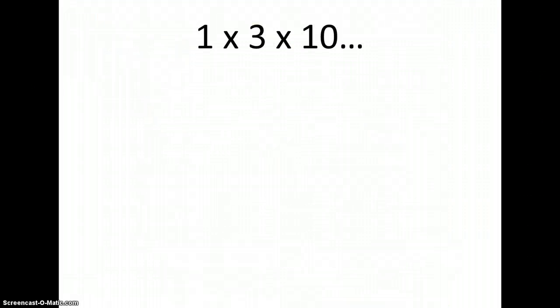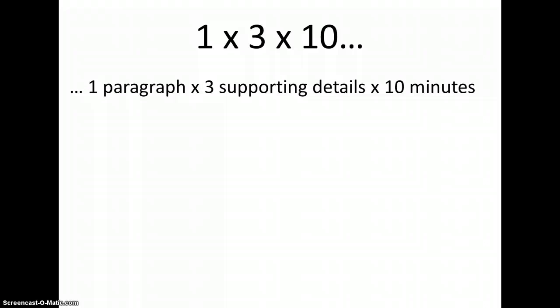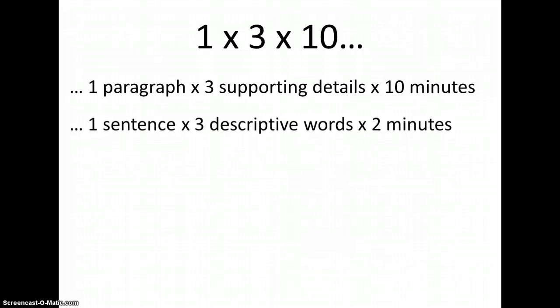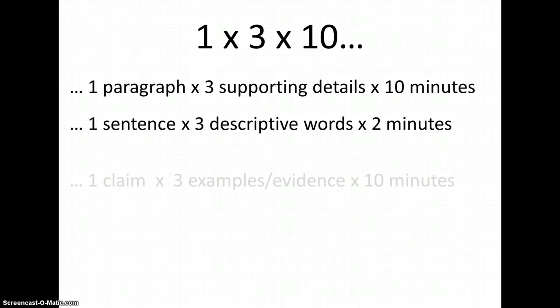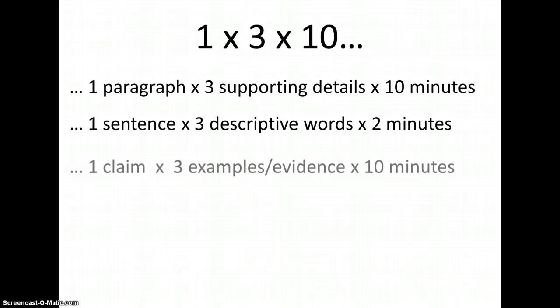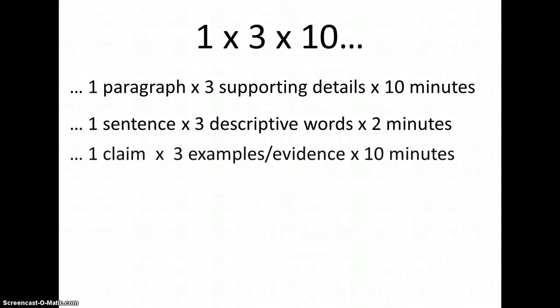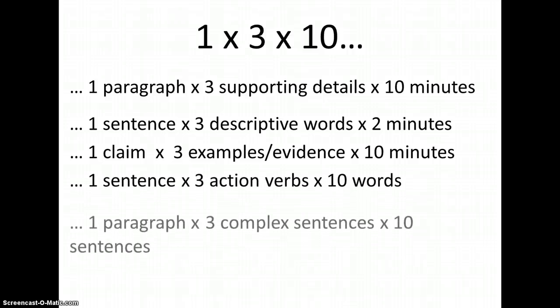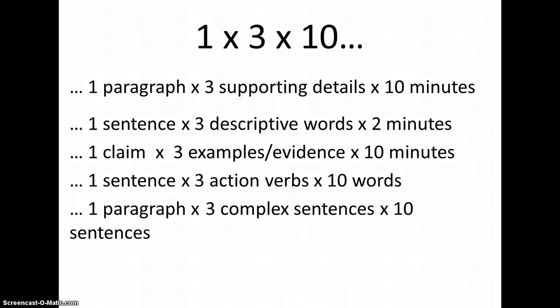The 'one' can mean one paragraph, one sentence, one page — any number of things. The 'three' can mean three supporting details or three examples. It could be three steps they took in a process, or three descriptive adjectives. The 'ten' can be ten minutes, ten sentences, or you can even change the ten to two minutes or five sentences. One by Three by Ten is just a basic structure and a starting point — you can change the specifics to work for you.